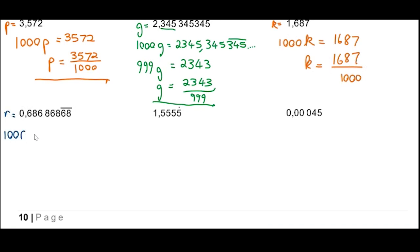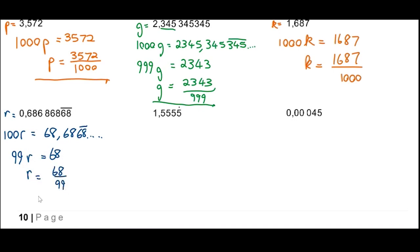The next one repeats with two decimal places: 0.6868... Let that be r. So 100r = 68.6868... Subtracting, 99r = 68, giving r = 68 over 99. This equals 0.6868... repeating. Don't be misled if your calculator shows 68 or 69 at the end — it's just rounding the last digit because it can't display all the numbers.